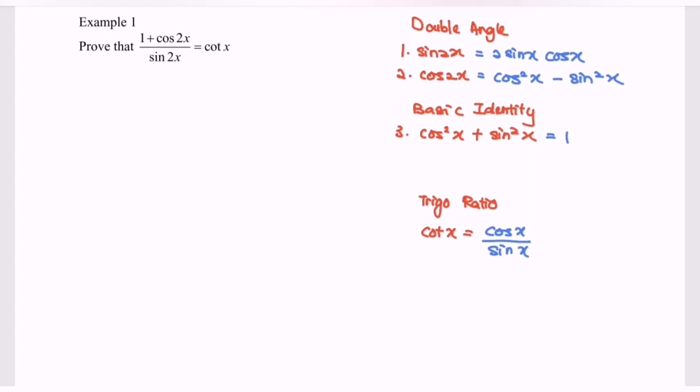Hello everyone, in this video I'm going to discuss some examples for trigonometric functions. Example 1: prove that 1 plus cos 2x over sin 2x is equal to cotangent x.